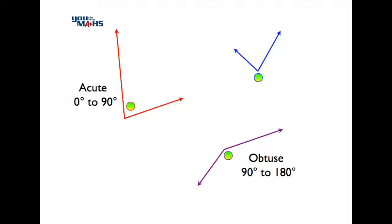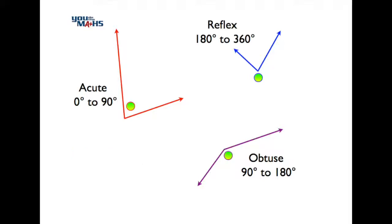An angle which is exactly 180 degrees is referred to as a straight angle, and that's shown in the bottom left hand corner here. An angle which is bigger than 180 degrees and less than 360 degrees is referred to as a reflex angle, and that's shown here in blue in the top right hand corner.